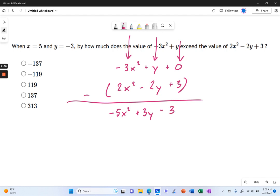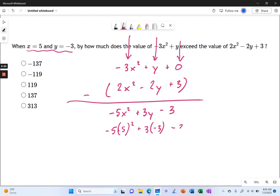Now, all we have to do is plug in our values. x equals 5, y equals negative 3. So, let's go ahead and do that. We say this becomes negative 5. And we have 5 squared plus 3 times negative 3 and then minus 3.